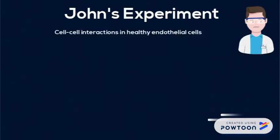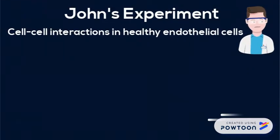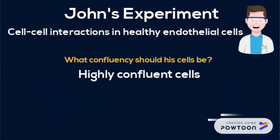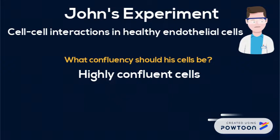John's experiment studies cell-to-cell interactions of healthy endothelial cells. He should perform his experiment on cell cultures at a high confluency. These cells would be in plateau phase where they are touching one another, which is how these cells are found naturally in tissues.